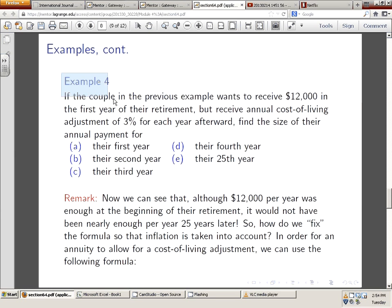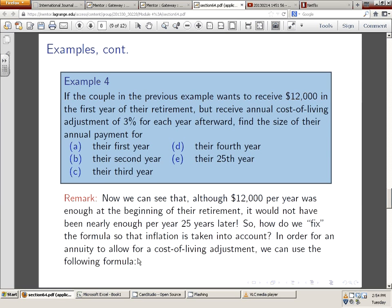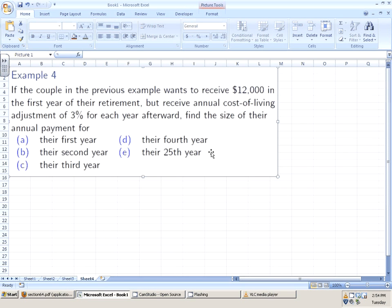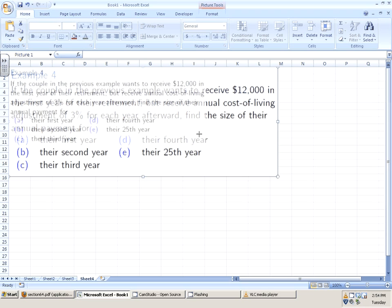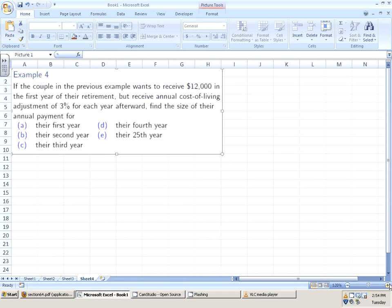Let's look at example 4, a really neat example. If the couple in the previous example wants to receive $12,000 in the first year of their retirement, but receive annual cost of living adjustments for each year afterward to find the size of their annual payment for the first, second, third, fourth, and 25th years.